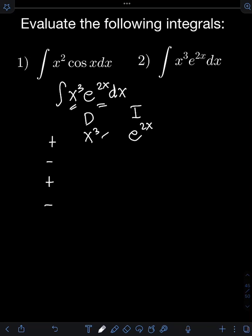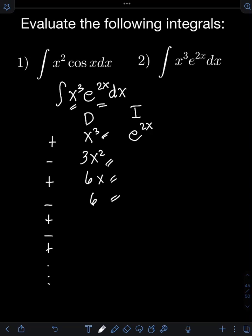For the derivative column, differentiating x cubed gives 3x squared. Differentiating 3x squared gives 3 times 2x, which is 6x. Then differentiating 6x gives 6. Let's extend the alternating signs here. Finally, differentiating 6 gives 0. Therefore, we stop differentiating because we've reached a derivative of 0.